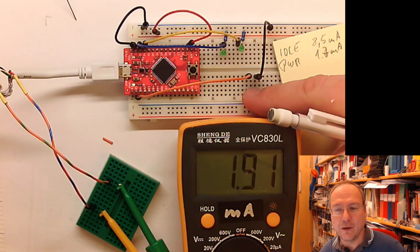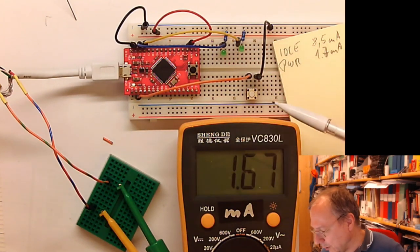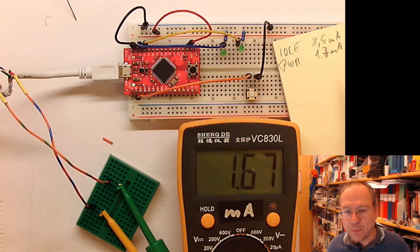When I now press the button here we also see that the current, the total current increases, but since it's only a very short active time we don't see it so much. I don't think that we will get much below this value of 1.7 milliamps here.